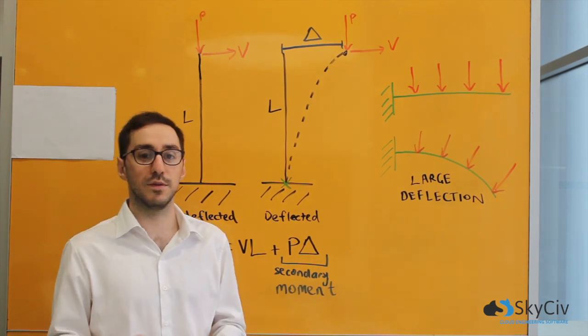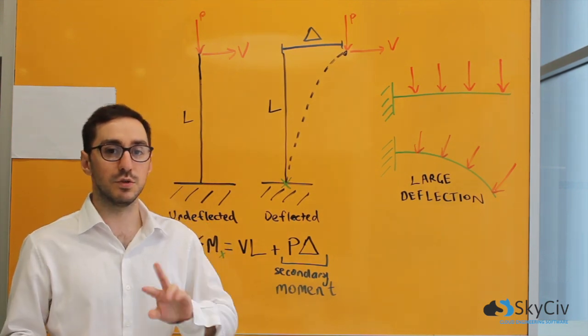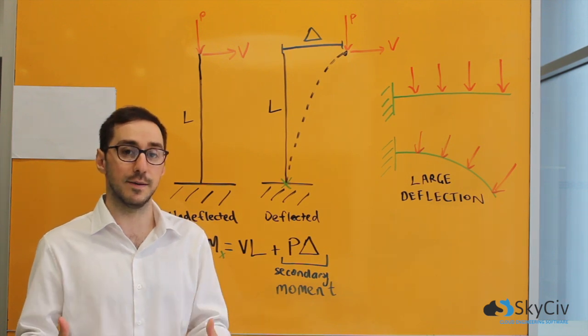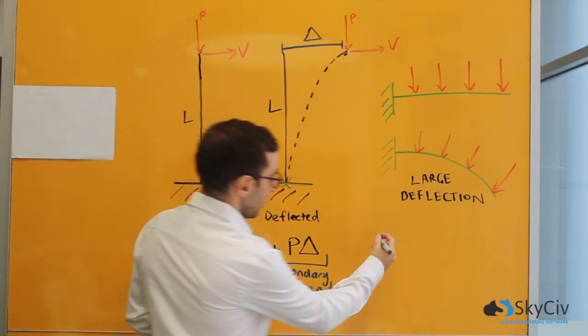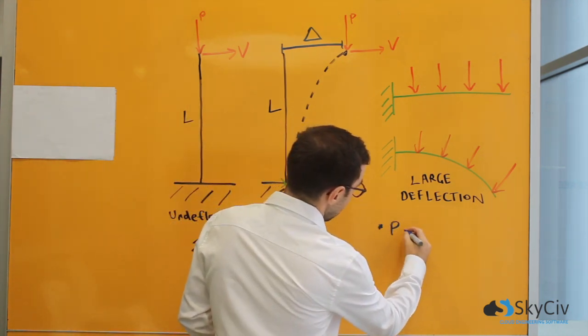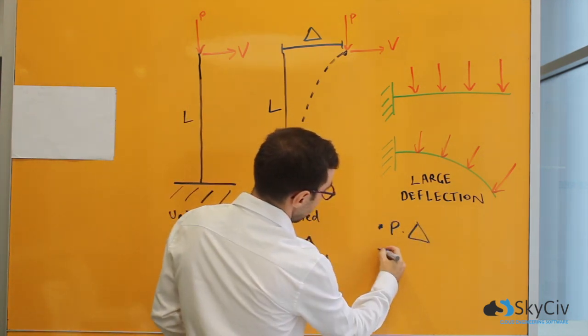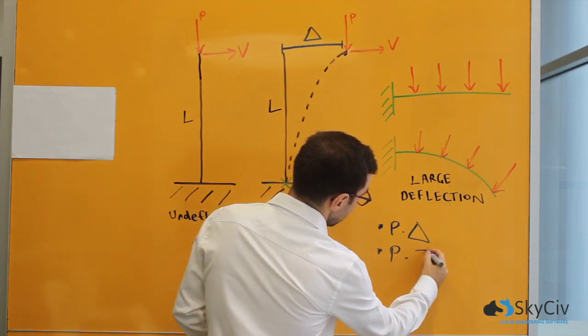Now the last thing I want to mention is that there's usually two types of P-delta effects that get confused or people muddle up. There is P-big-delta and P-little-delta.